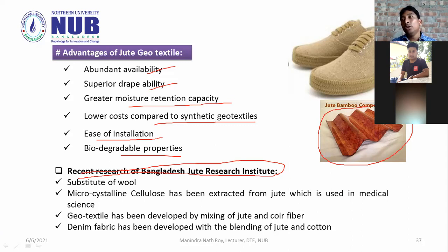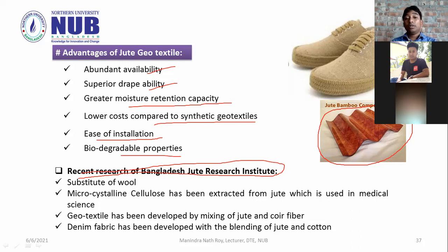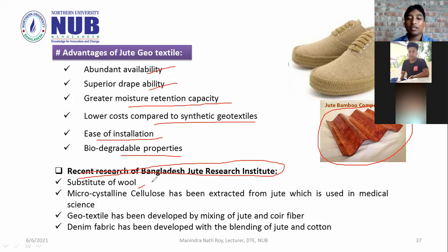Jute can be used as composite materials. It is also a substitute for wool. Micro-crystalline cellulose has been extracted from jute for use in medical science. This includes geotextile and denim fabric applications, and jute can be blended with wool in denim fabric at advanced levels.